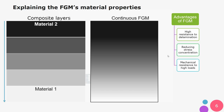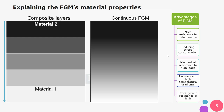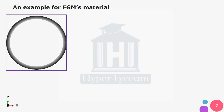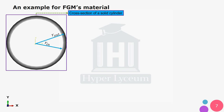Other advantages of using FGM include reduced stress concentration, mechanical resistance to high loads, resistance to high temperature gradients, and high crack growth resistance. When corrosive chemicals are stored in a tank, the inner layer must be anti-corrosive while the outer layer must be reinforced. In such cases, FGM is a perfect solution for making the tanks.